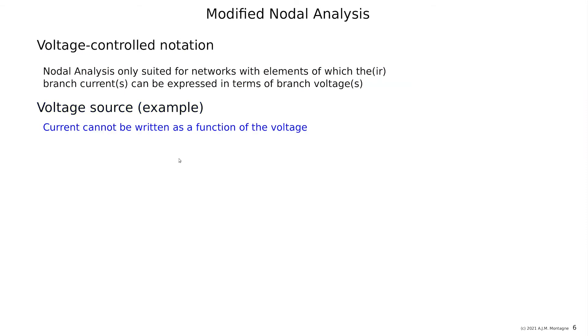The current cannot be written as a function of the voltage. It's not a voltage controlled element. The current depends on the external network. But the voltage can be written as a function of the current. Namely, it's always the same. So the voltage V, the voltage at node J minus the voltage at node K is V for all values of the current. That is basically what is the fact. And that is a current controlled notation.